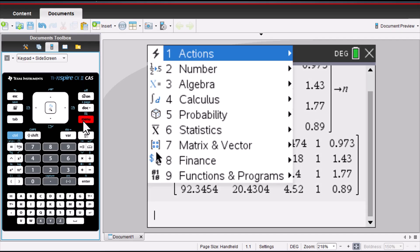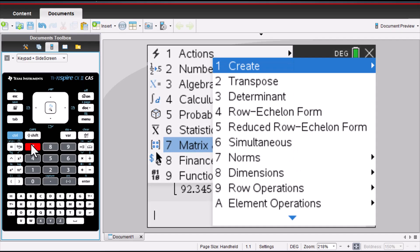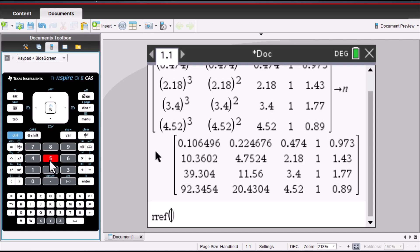Click on this menu. 7. Go to 5. Reduce the row echelon form. RREF. Then press this n. Enter.